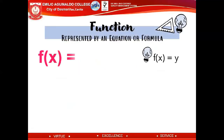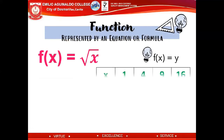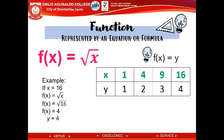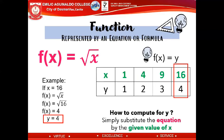This second equation is also a function. As you can see, the table of values consists of 1, 4, 9, and 16, and no value of x repeats. For example, to get y when x is 16, I simply substitute 16 into the square root of x: the square root of 16 is 4, therefore y equals 4. Simply substitute the equation with the given value of x.